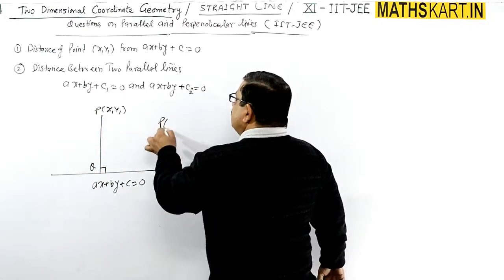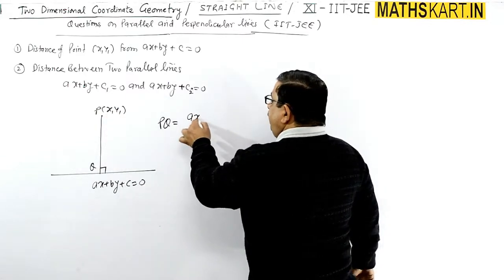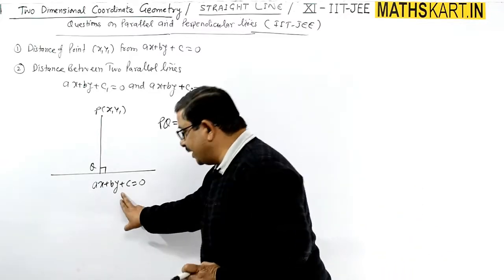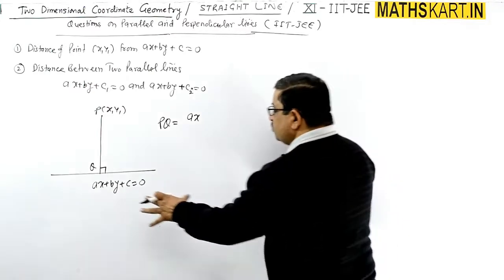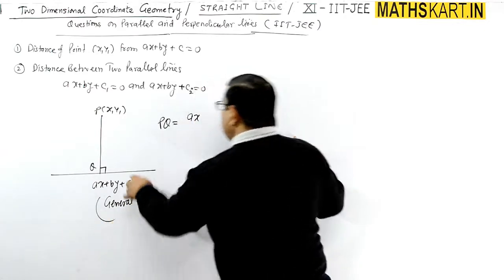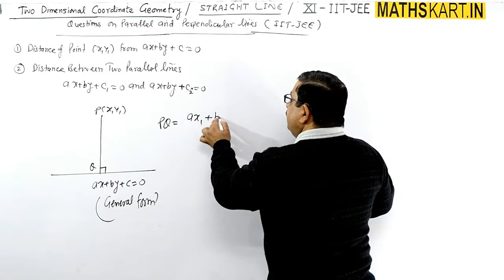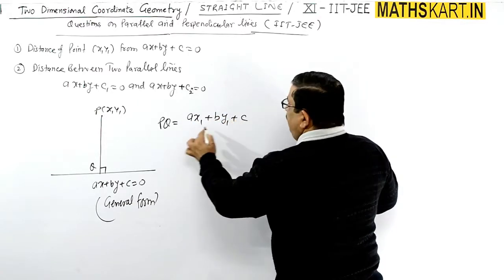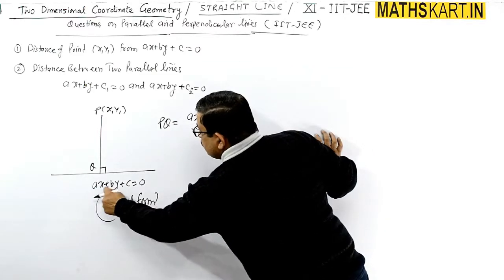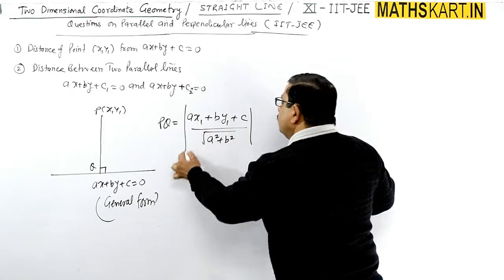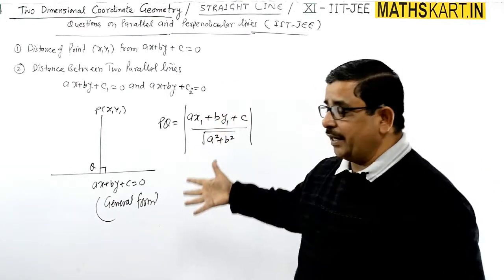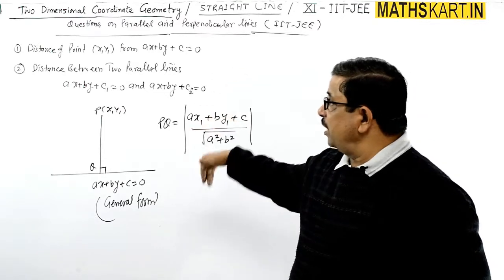There is a direct formula for this, and we will use it. The formula uses the point (x1, y1) and the line. The line must be in general form — ax plus by plus c equal to zero — on the left-hand side. The formula is ax1 plus by1 plus c divided by the square root of a squared plus b squared. Take the mod of the whole thing. This gives the distance between the point and the line.